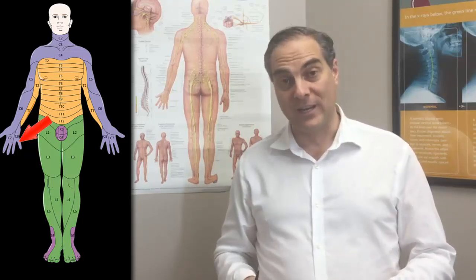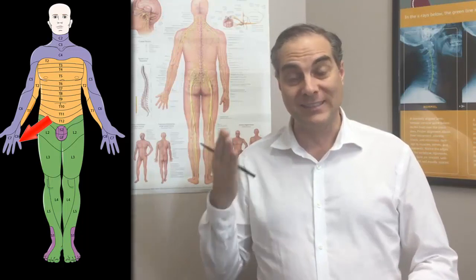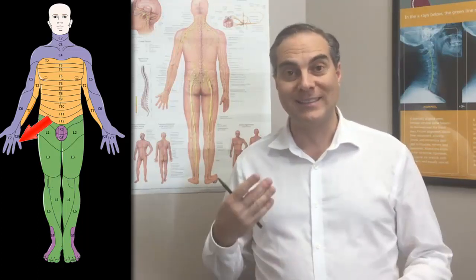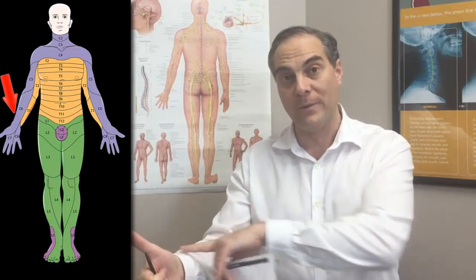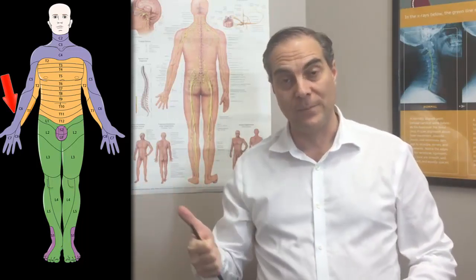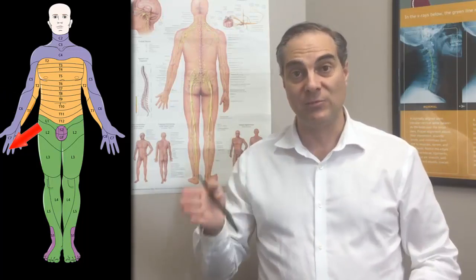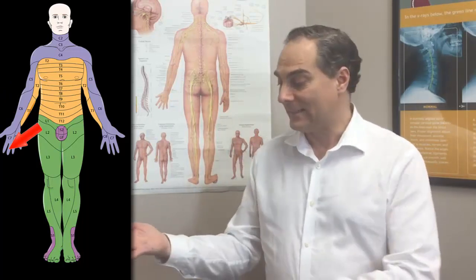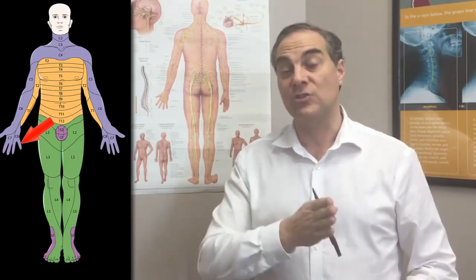C8 radiculopathy involves the C7-T1 disc area — a disc bulge or degeneration here causes pain in the neck and along the arm, particularly along the inside of the arm into the pinky finger. To summarize the three main distributions: C6 radiculopathy goes to the thumb and lateral forearm via a C5-C6 disc bulge or degeneration; C7 radiculopathy goes to the middle finger via a C6-C7 disc bulge or degeneration; and C8 radiculopathy goes to the pinky finger via a C7-T1 disc bulge or degeneration.